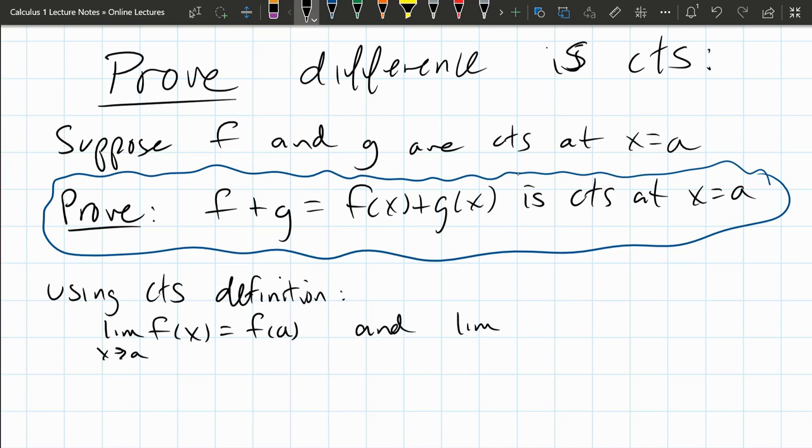And the limit as x approaches a of g of x, because g of x was also assumed to be continuous, this also equals g of a.